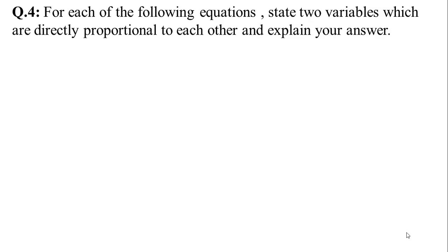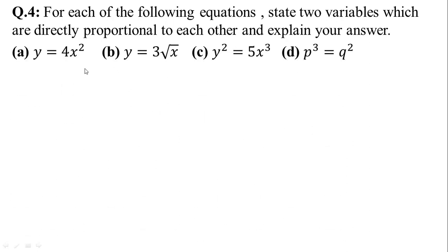In Question No. 4, for each of the following equations, state the two variables which are directly proportional to each other and explain your answer. There are 4 parts. In part a, y is equal to 4x squared. In part b, y is equal to 3 times square root of x. In part c, y squared is equal to 5x cubed. And in part d, p cubed is equal to q squared.